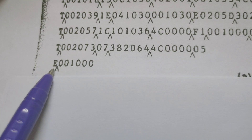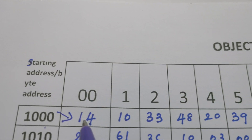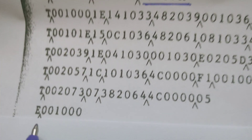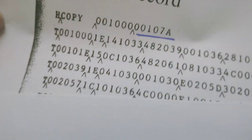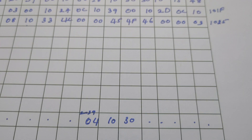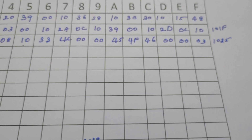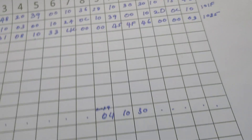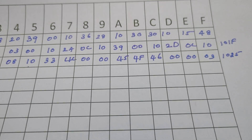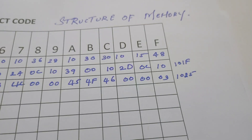The end record says that after writing all the text records into memory, begin execution starting from address 1000. That is the information given by the end record. This is the task of the absolute loader — it does only the loading operation. It does not perform relocation or linking. Now let us look at the algorithm of the absolute loader.